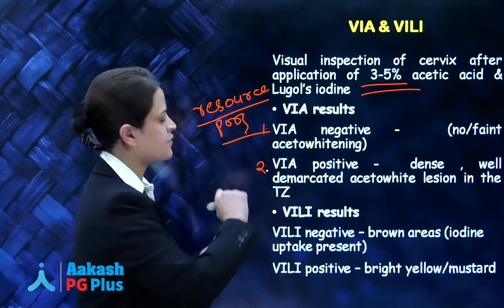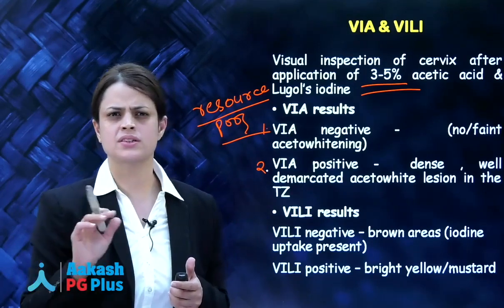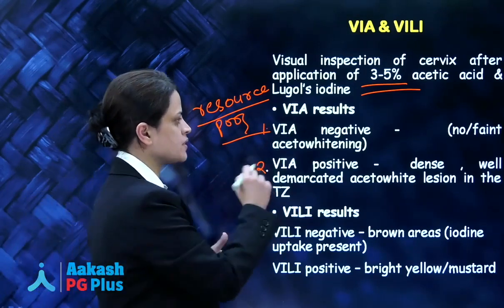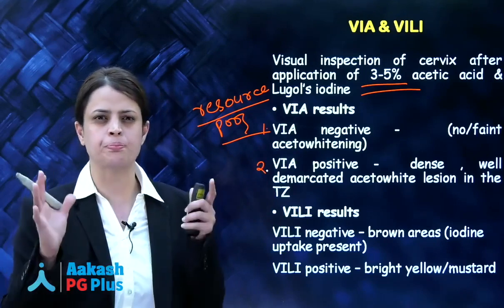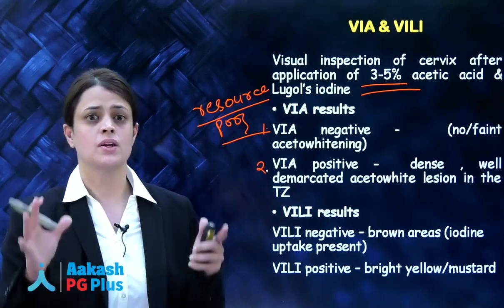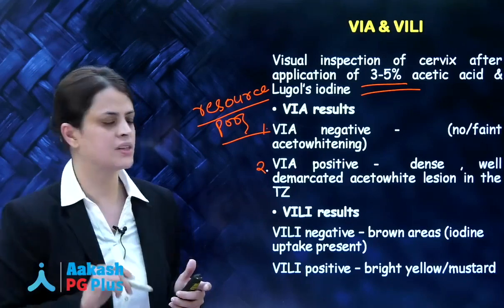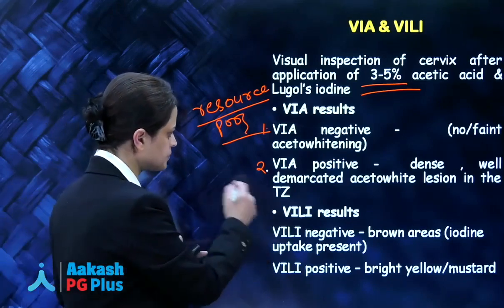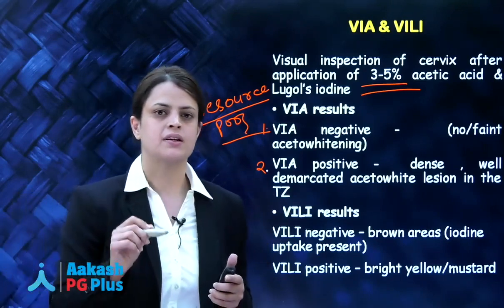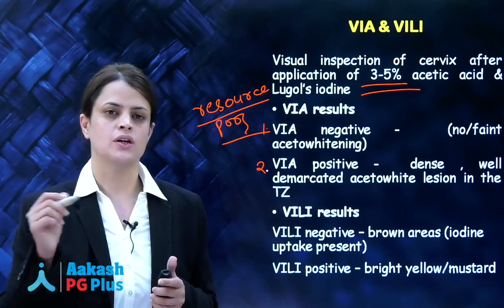VIA results are typically classified as VIA negative if we see no aceto-whitening or just faint aceto-whitening, and VIA positive if we see a dense opaque aceto-white plaque on the cervix within the transformation zone with well-defined borders. In VILI, we smear or stain the cervix using Lugol's iodine or Schiller's iodine.